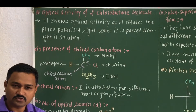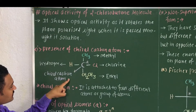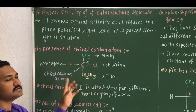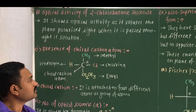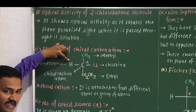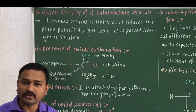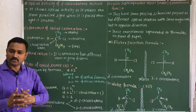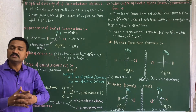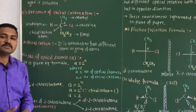By observing the structure of 2-chlorobutane, you will see that the central carbon atom acts as a chiral carbon atom, as it is attached to four different atoms or groups. One group is a methyl group, next is a hydrogen atom, then an ethyl group, and the last one is chlorine. Since all four atoms or groups are different, 2-chlorobutane is eligible for showing optical activity.